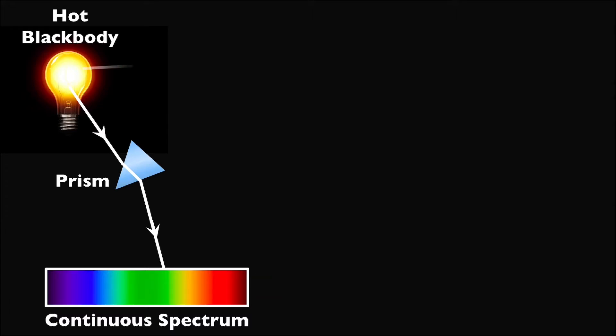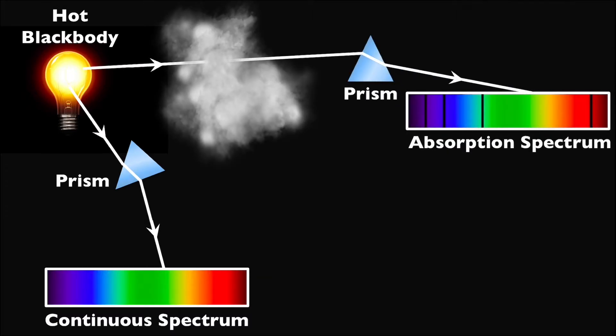But if there was a cool, low-density gas between us and the light bulb, the spectrum that we would see would be slightly different. In this case, the gas has absorbed some of the wavelengths of light, leaving gaps in the continuous spectrum from before, so now we see an absorption spectrum instead.